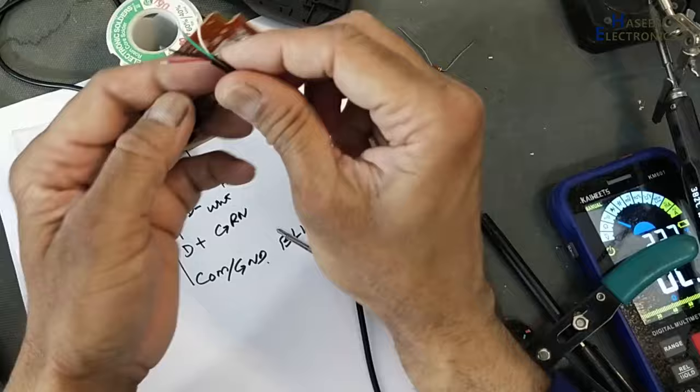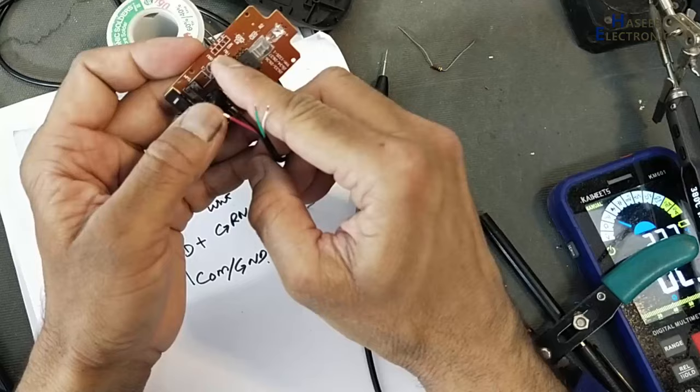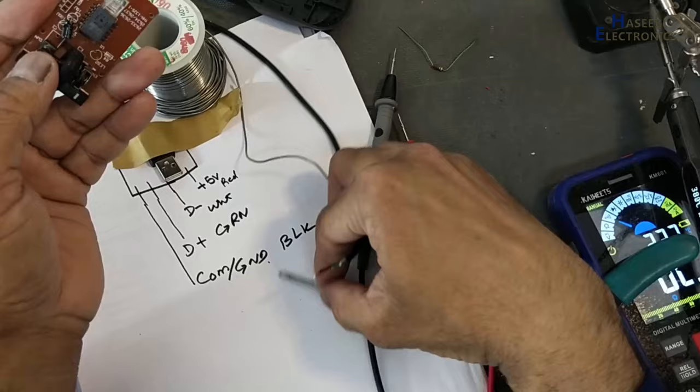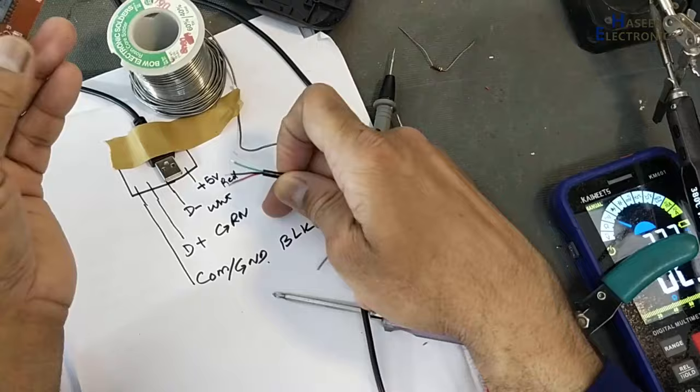Now we will insert wires with the same configuration. V that is red wire, then ground with this configuration black wire, D positive green and white D negative.